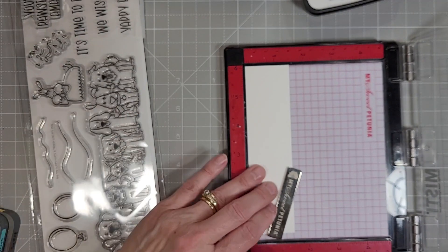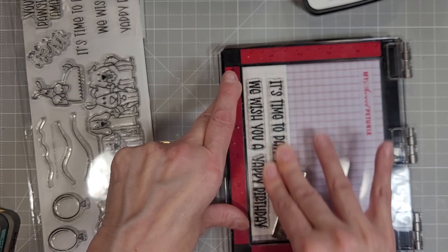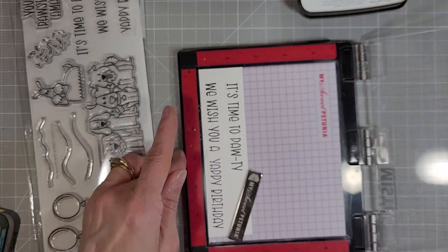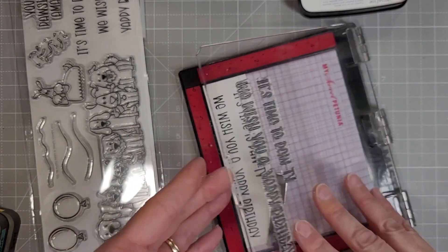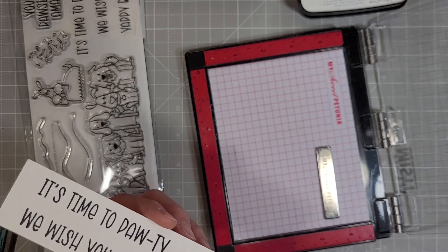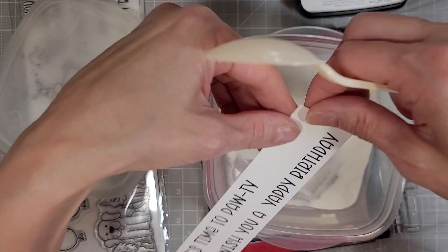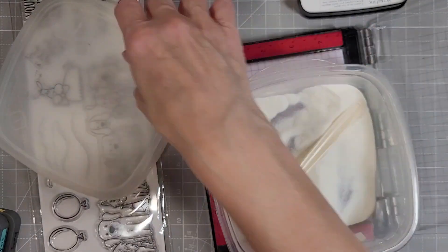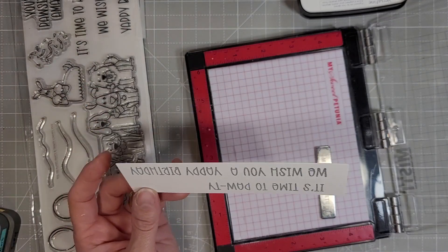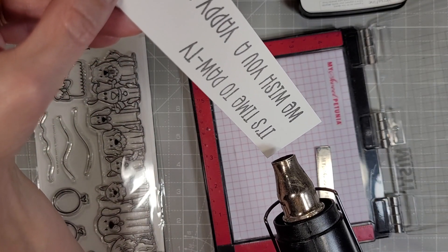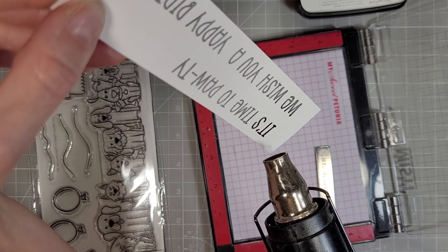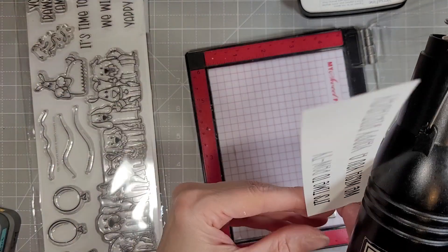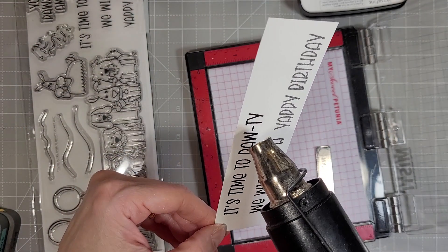We're going to add some fun sentiments that are punny from this stamp set. It's time to potty as in paw, and then we wish you a yappy birthday. I am however going to pull in another product for the birthday component. We're going to use some clear embossing powder because I like the raised shiny finished detail that embossing powder adds and I had used a pigment ink, the VersaFine Clair Nocturne ink which is my go-to for crisp black sentiments. Love that ink.